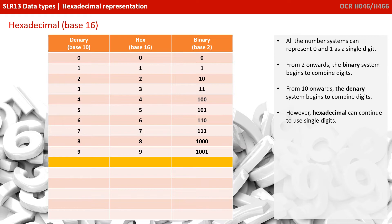We can proceed in a likewise fashion all the way up until we reach the denary value 9. After that, we don't have a single digit in the denary system anymore for representing 10, so we have to combine digits. And again in hex, we now have to do something special as described earlier and switch to using letters, because hex allows us to represent values above 10 in denary in a single digit. So in denary we have 10, in hex we have A, and in binary we have 1010.